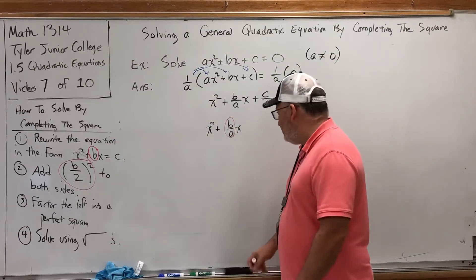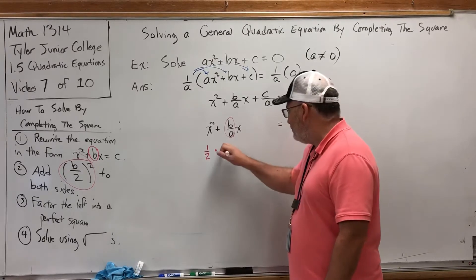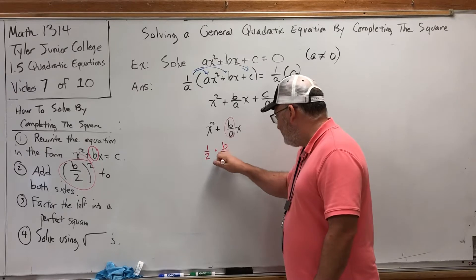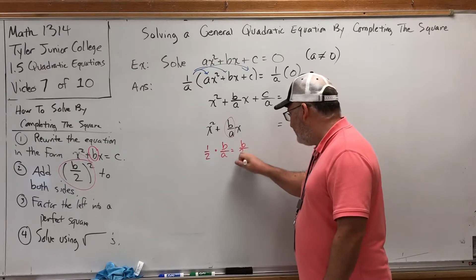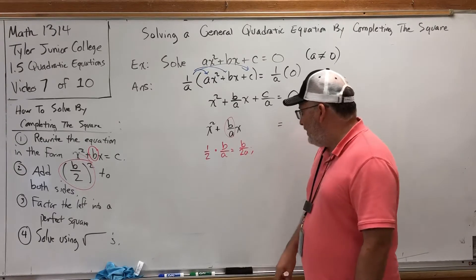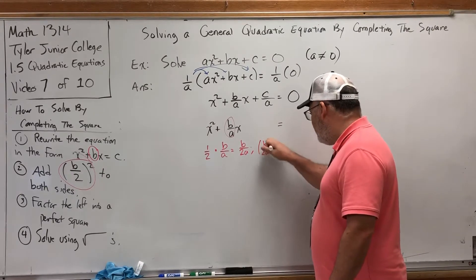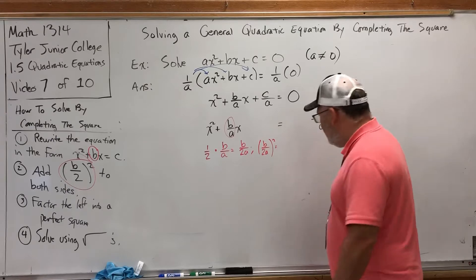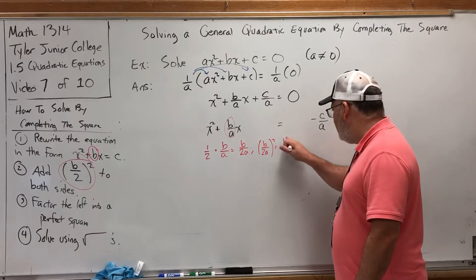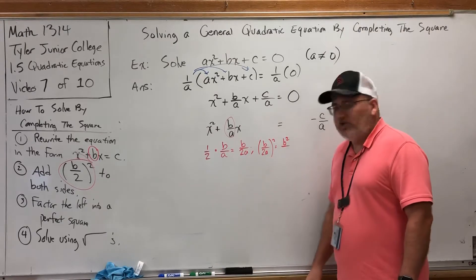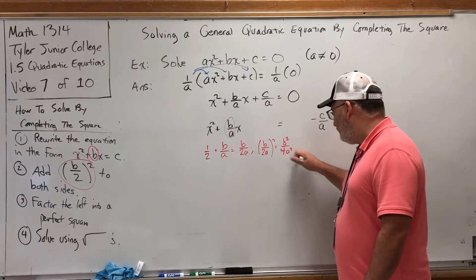We're going to take half of b over a. Remember, half of is the same as one-half times. One-half times b over a — just multiply: one times b is b, two times a is 2a. But then after we take half, we've got to square it. So we have to square b over 2a. When you square a fraction, you can square each side of it. So on top we get b squared, and on the bottom, 2 squared is 4 and a squared is a squared. So this is what we need to add to both sides.